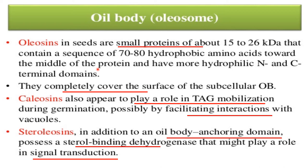Oleosin contains a sequence of 70 to 80 hydrophobic amino acids towards the middle of the protein and has more hydrophilic N and C terminal domains. They completely cover the surface of subcellular oil bodies. Caleosin also appears to play a role in triglyceride mobilization during germination, possibly by facilitating interaction with the vacuoles.